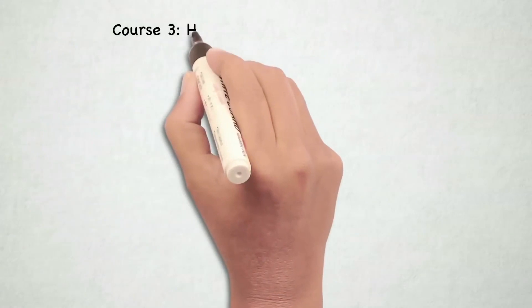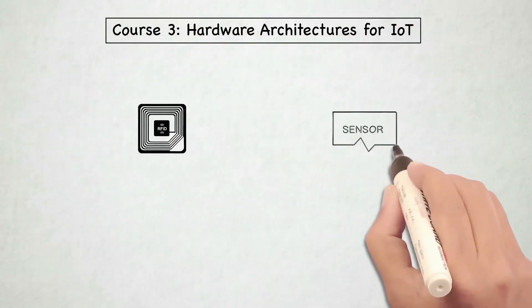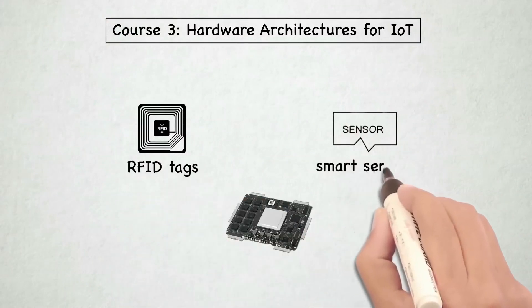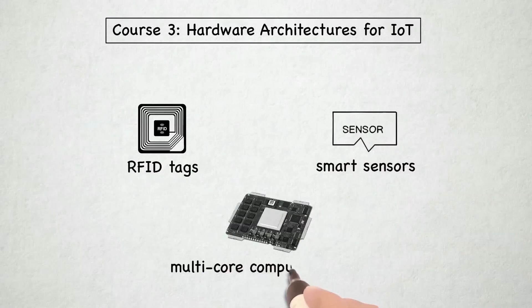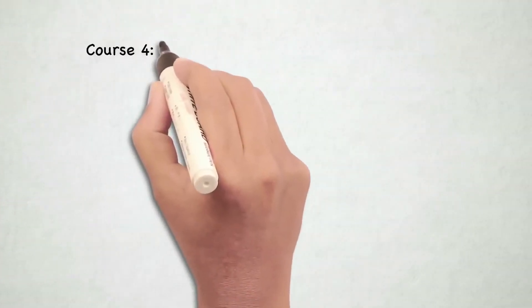The Hardware Architectures for IoT course delves into the internal architecture of components such as RFID tags, smart sensors, and multi-core computing systems.